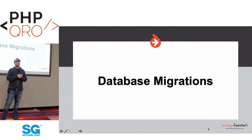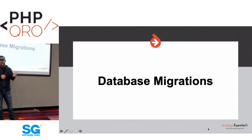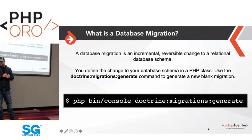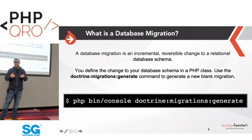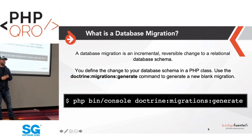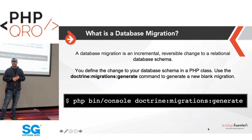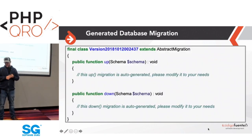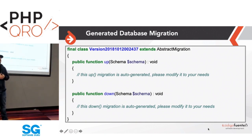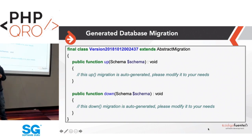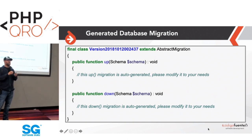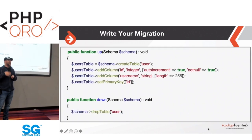The first thing I want to introduce is database migrations. When you're starting a brand new project, you need to create entities and database tables to start storing data for your application. When you generate a migration, it generates a blank template that you can do anything with. You don't have to use the ORM or advanced features — you can manually type SQL and pass it to the addSQL method.